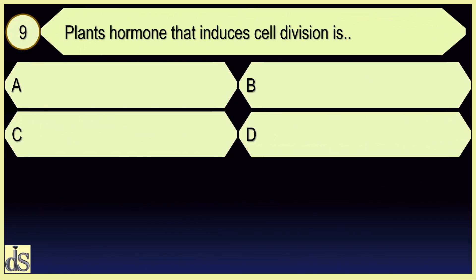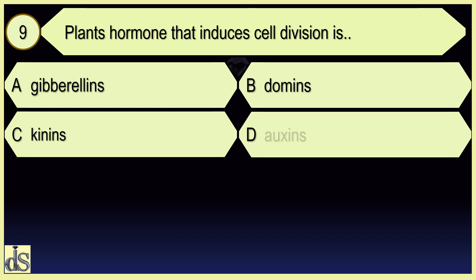The plant hormone that induces cell division is cytokinins.